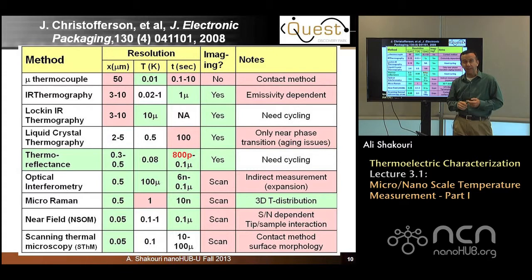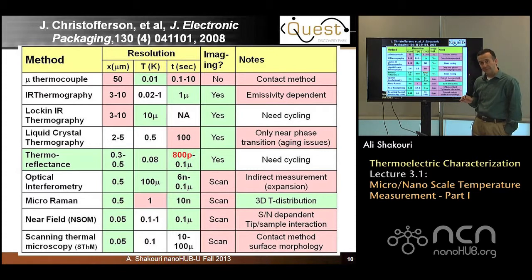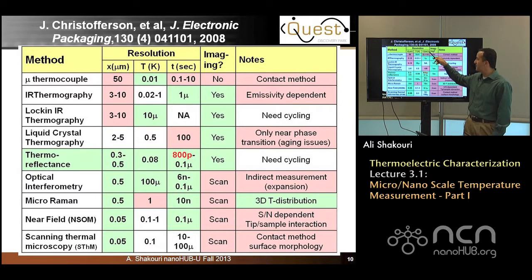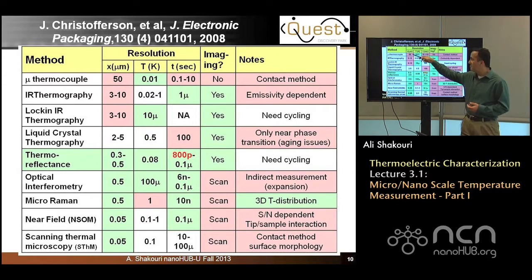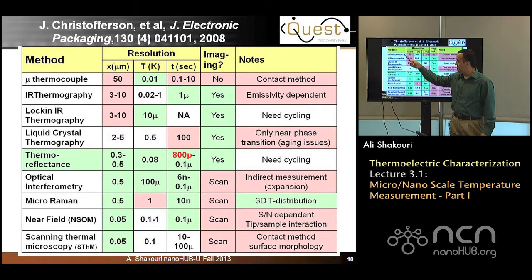Here is a table showing how temperature measurements can be done — it's the state of the art for measuring temperature at the micro and some nanoscale. There are different methods, each with a spatial resolution in microns, a temperature resolution, a measurement speed, and whether it is an imaging technique or a point measurement. Basically, the week three lectures cover these methods.